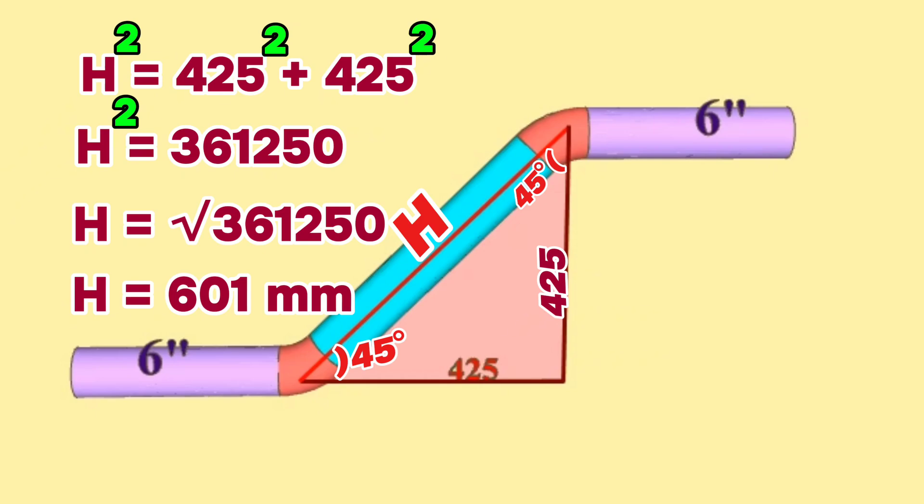So, the overall length between the centers of the 45-degree butt weld elbows is 601 millimeters.